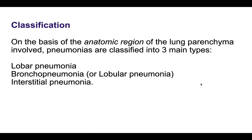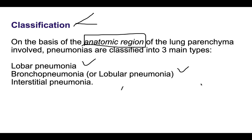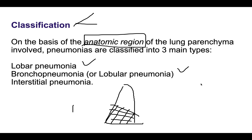There are many classifications of pneumonia. The first classification is based on the anatomical region of the lung parenchyma involved. According to which region of the lung is involved, pneumonia is classified into lobar pneumonia, broncho or lobular pneumonia, and interstitial pneumonia. In lobar pneumonia, one lobe of the lung is involved.